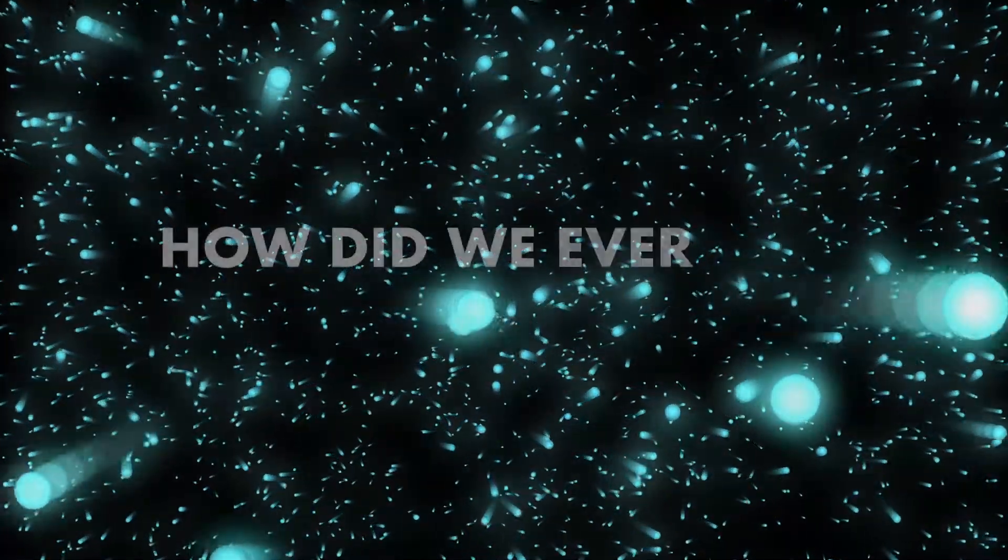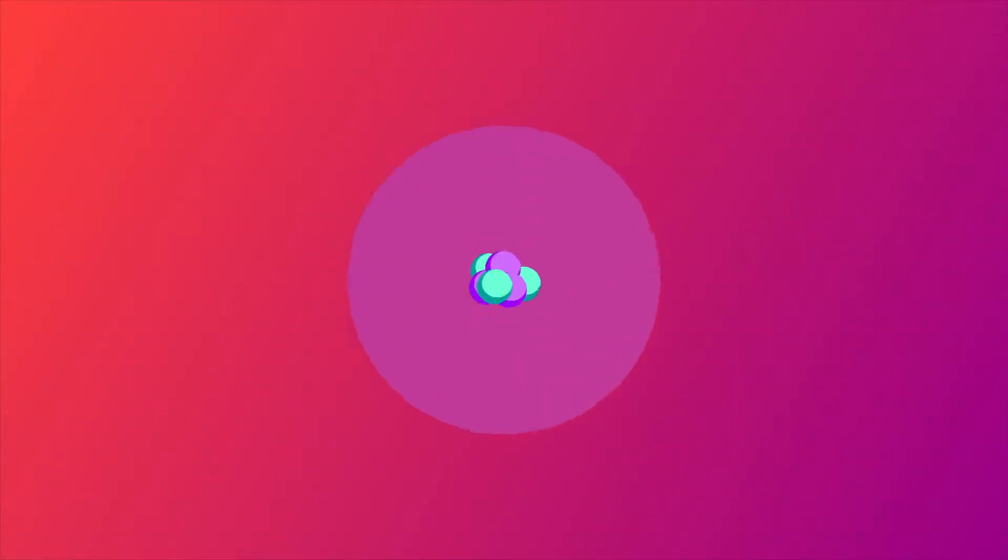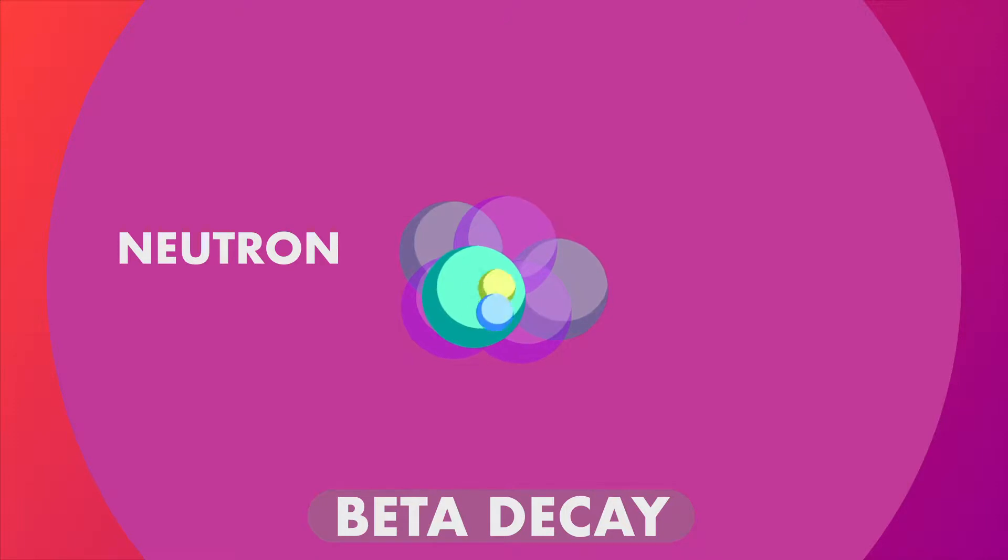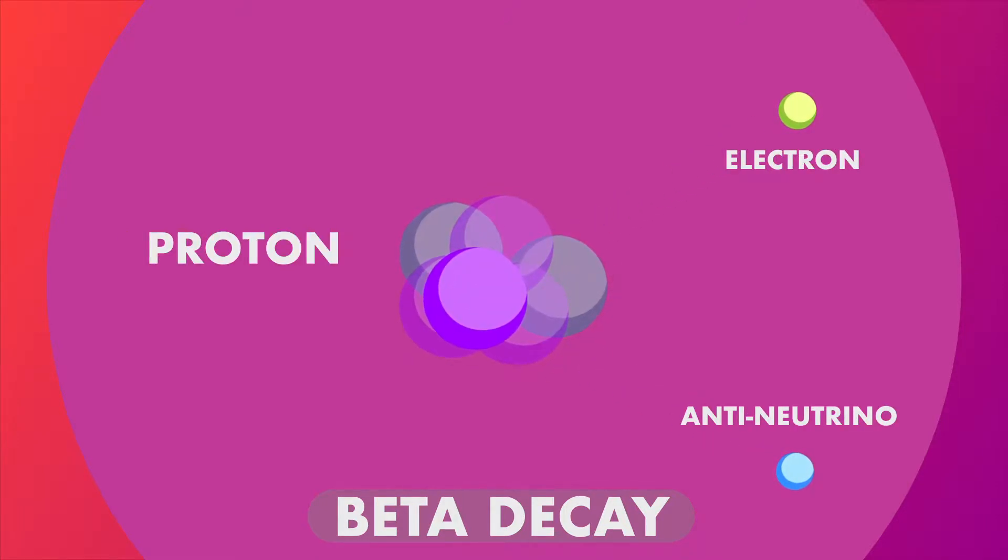With a flood of neutrinos everywhere, but an almost undetectable presence, how did we ever find these particles? Well, it wasn't easy. First theorized in the 1930s to balance out the equations of a type of nuclear decay called beta decay, it took a quarter century before scientists would finally discover them.